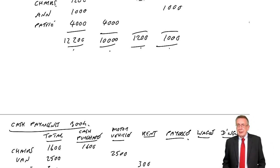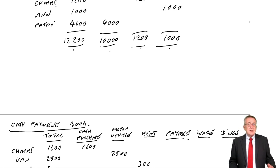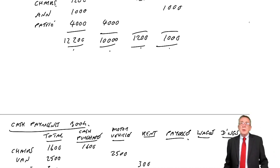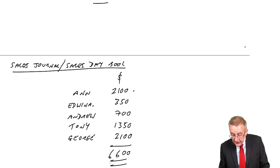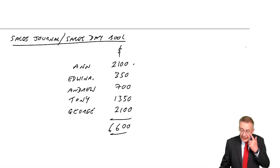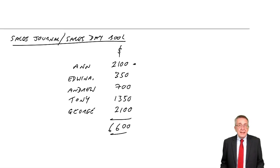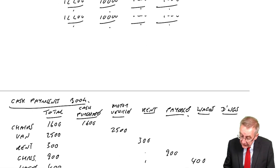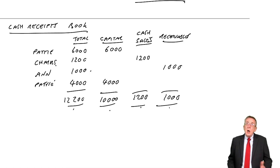One thing we do need to keep a check on, from day to day, is how much we owe suppliers and how much customers owe us. For instance, partway through the month, Anne, who was one of our customers, may ring us wanting to check how much she owes us. If we look at the sales day book, we know how much we sold her — £2,100. But we then have to check if she's paid us any money. From the cash receipts book, yes, she's paid us £1,000. So she still owes us £1,100.